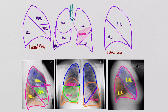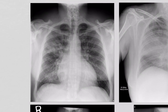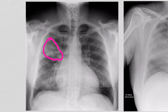Now let's look at a couple of different pneumonias — bronchopulmonary, lobar, cavitary, and interstitial. Zooming in on the bronchopulmonary one, you can see these little patches of infiltrate. There's a small white spot there — some of the alveoli have filled up with pus, and we've perhaps obliterated one of the bronchi.